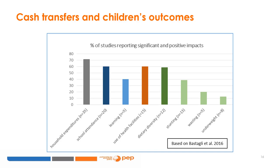Second, even when taking into account that fewer studies are available, cash transfers are less likely to have an impact on ultimate outcomes related to learning and nutrition. Out of all studies available, only 40% point to a significantly positive impact on learning, and fewer than that report positive nutritional outcomes.